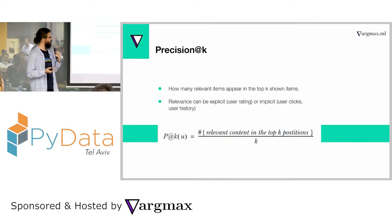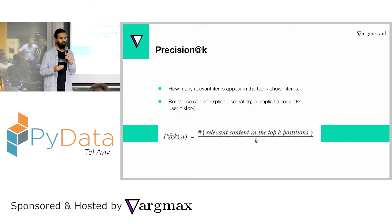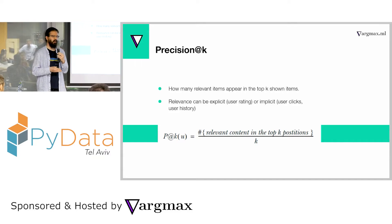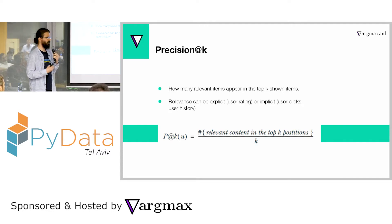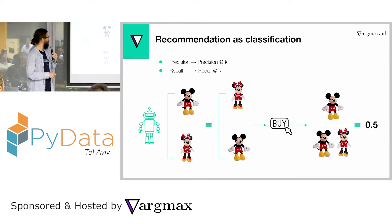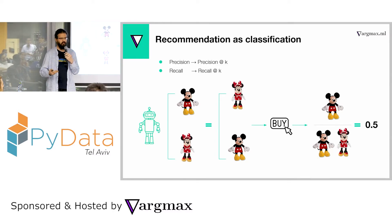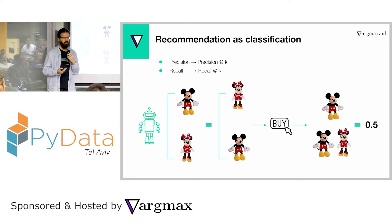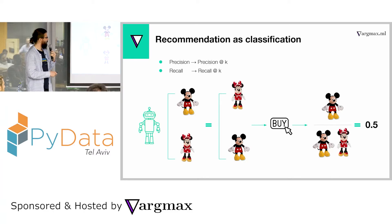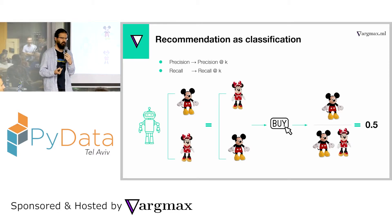Let's start with Precision@K. Precision@K is a very simple classification problem. You ask: if I'm showing you K items, how many of those items are relevant to you? Relevance here is binary — either the item is relevant or not. You simply sum the number of relevant items divided by K, the number of items being shown. For example, if I'm showing Mickey Mouse and Minnie Mouse, and only Mickey Mouse is relevant, the Precision@2 is 0.5. Importantly, in Precision@K the ordering doesn't matter — whether the relevant item is first or second, the same score is given.